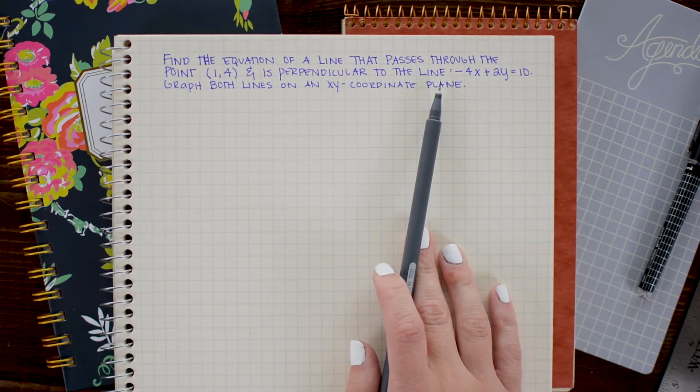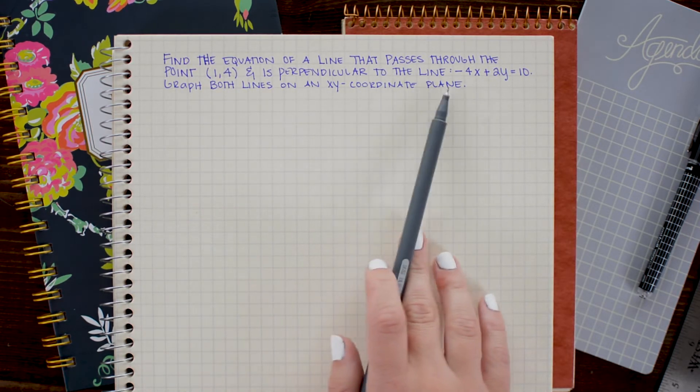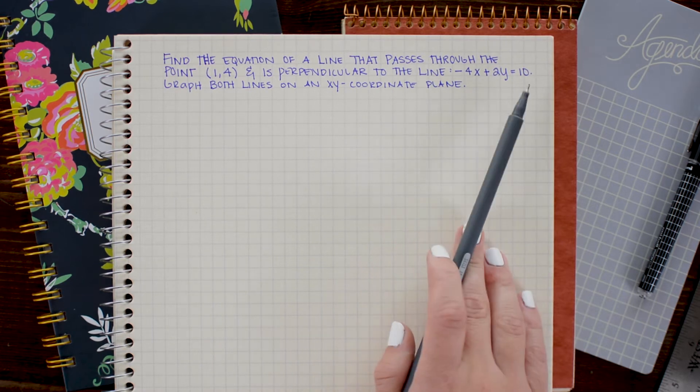So for this example, we are going to construct a line that passes through the point (1, 4) and is perpendicular to the line negative 4x plus 2y equals 10.